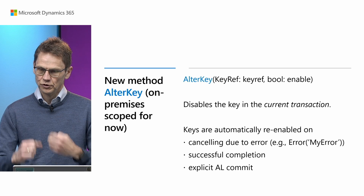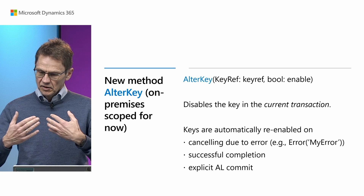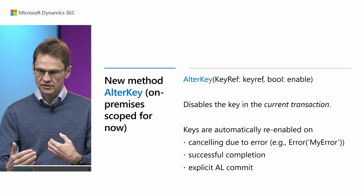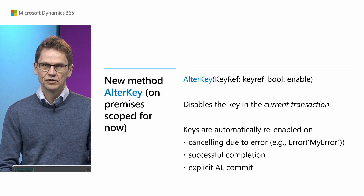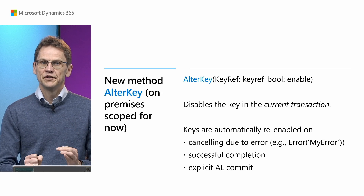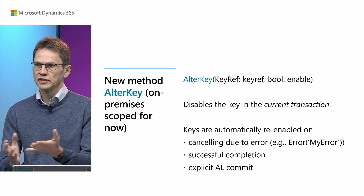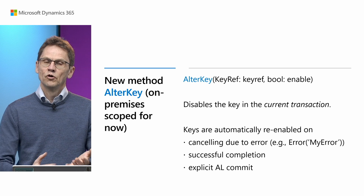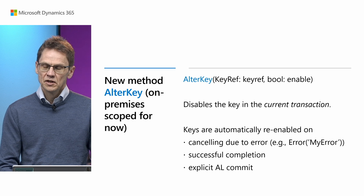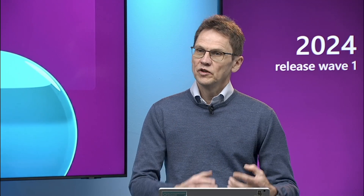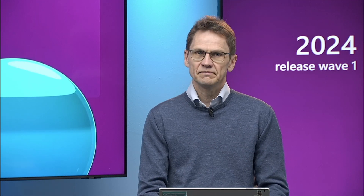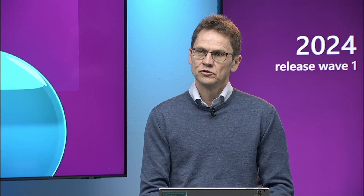The alter key method disables keys during the current transaction, meaning it's almost the same as if you've dropped the index, done all your deletes, and then re-enabled it. It is automatically re-enabled when the current transaction ends, either due to the transaction being cancelled due to an error and rolled back, or at an explicit AL commit. We aren't opening this up always because the index needs to be rebuilt afterwards when re-enabled, so it is only viable when you need to delete a lot of data. This has allowed us to speed up the deletion of change log entries significantly, enabling our customers to clean up those tables.